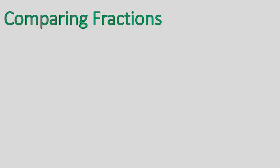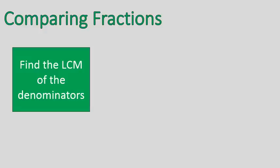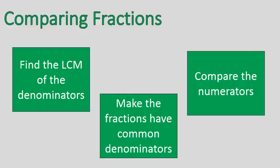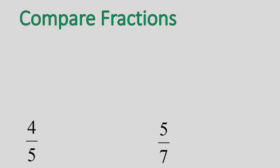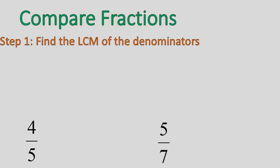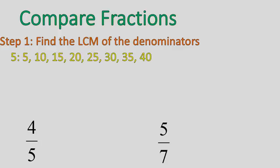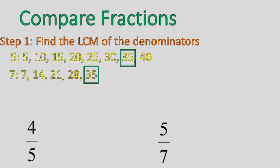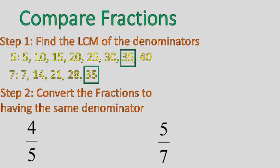Now the third part of this lesson is comparing fractions. To compare fractions, find the lowest common multiple of the denominators, make the fractions have that common denominator, and then compare the numerators. If the denominators are the same, comparing the numerators will show you which fraction is larger. Let's compare 4 fifths and 5 sevenths. I'll find the least common multiple of 5 and 7 by writing out their multiples until I find one that's common — that's 35. Now I'll convert both fractions to a denominator of 35.